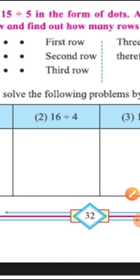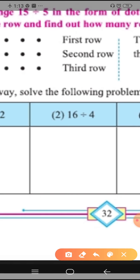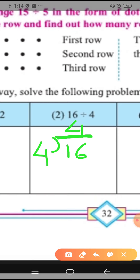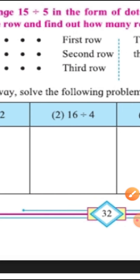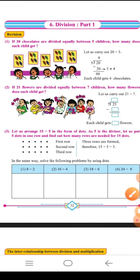Now the second sum is sixteen divided by four. Write sixteen inside and four outside. From the four times table: four ones are four, four twos are eight, four threes are twelve, four fours are sixteen. So the quotient is four and the remainder is zero. In this way you have to do all the sums given on this page — this is your homework.